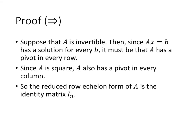Since the theorem is an if and only if, we prove both directions. First, assume A is invertible. This means Ax = b has a solution for every b, so A must have a pivot in every row. Since A is square, it also has a pivot in every column, meaning its reduced row echelon form is the identity matrix. Therefore A is row equivalent to the identity.